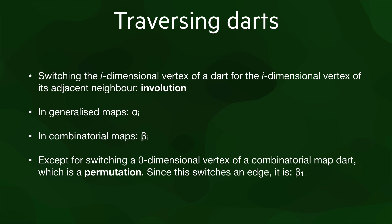This operation to switch a vertex of a dart for the vertex of its neighbor that has its same dimension is known as an involution. This term means that a mathematical operation is its own inverse, which is true here, since doing the same operation twice returns us to the original dart.